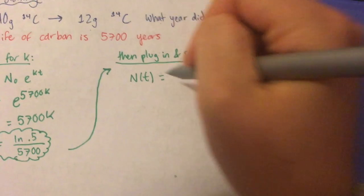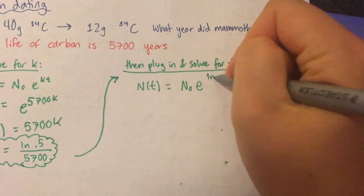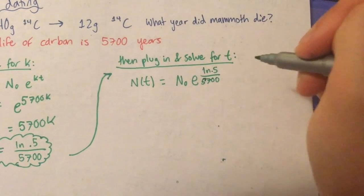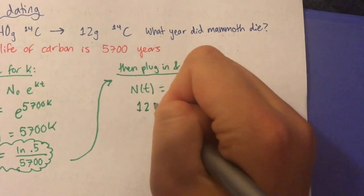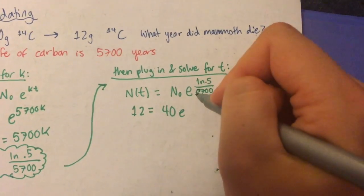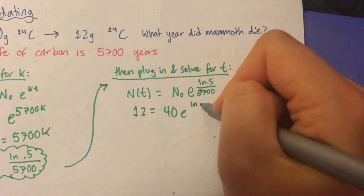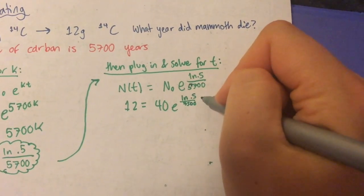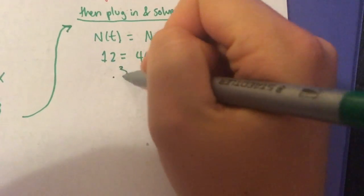Next, we plug in our k value as well as 40 grams and 12 grams and the half-life of carbon at 5,700 years into our general formula. This time we're simplifying for t, which is the time since the woolly mammoth was last alive.